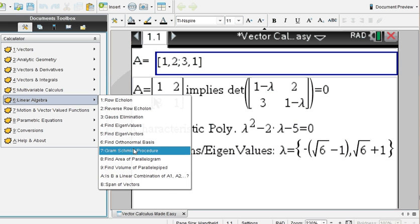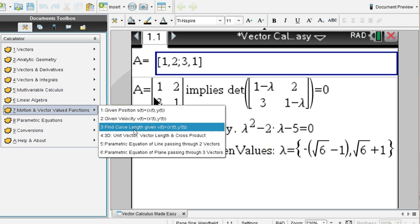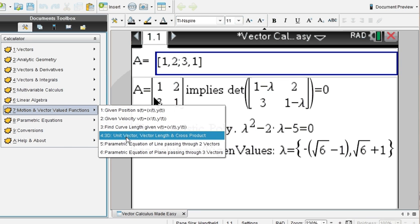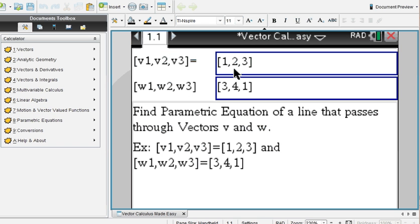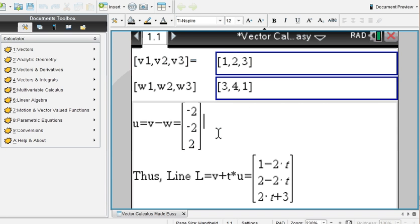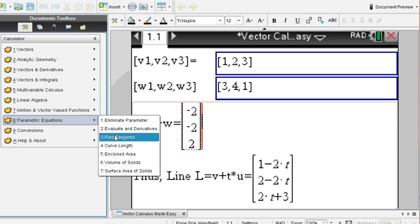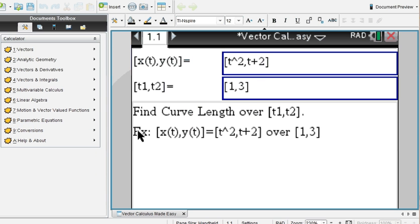You can find here, orthonormal basis, area of a parallelogram, span of vectors, vector value functions, a parametric equation of a line passing through two vectors. Let's look at this, you enter your two vectors, you take the difference of the two vectors, that's your new directional vector, so the line is going to be this, in terms of t, so you can see this is very comprehensive.